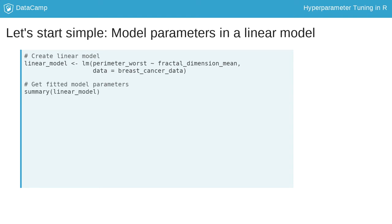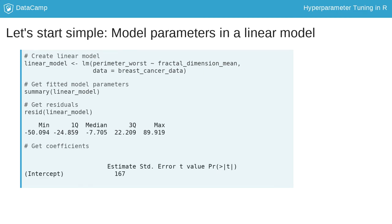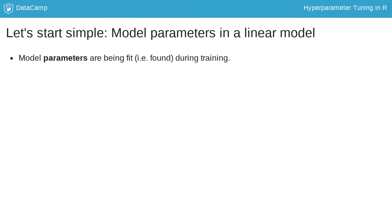The summary function will give us an overview of the fitted linear model and its results, like residuals, coefficients and statistics. The results of our fitted linear model give the model parameters. Thus model parameters are the result of model fitting. In machine learning we use the word training instead of model fitting. So we can say that the model parameters are being fit or found during training.